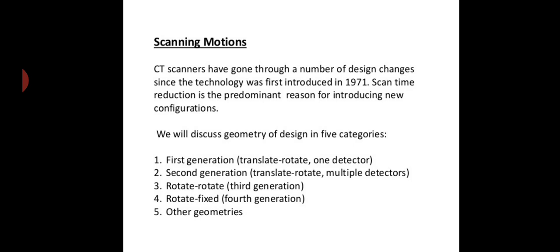CT scanners have gone through a number of design changes since the technology was first introduced in 1971. Scan time reduction is the predominant reason for introducing new configurations. Thus, for reducing the scan times, different generations of CT were introduced. We will discuss geometry of design in five categories.